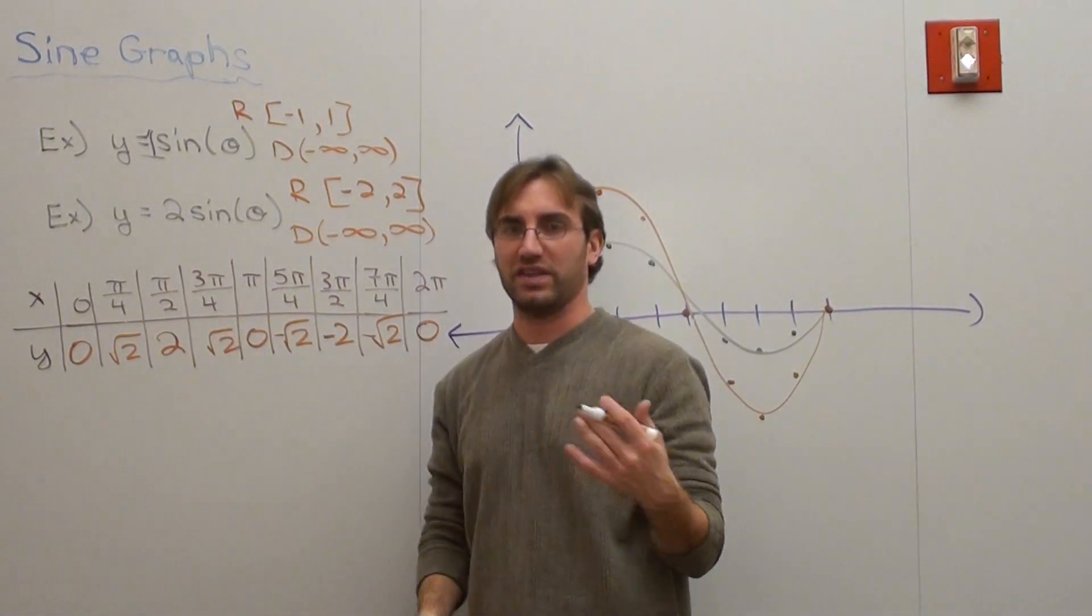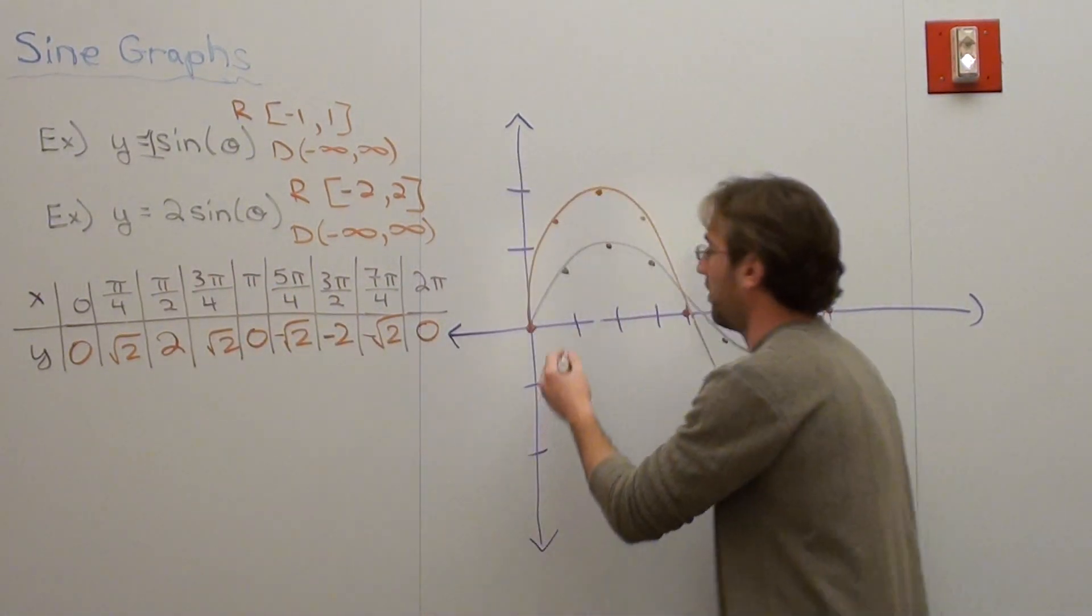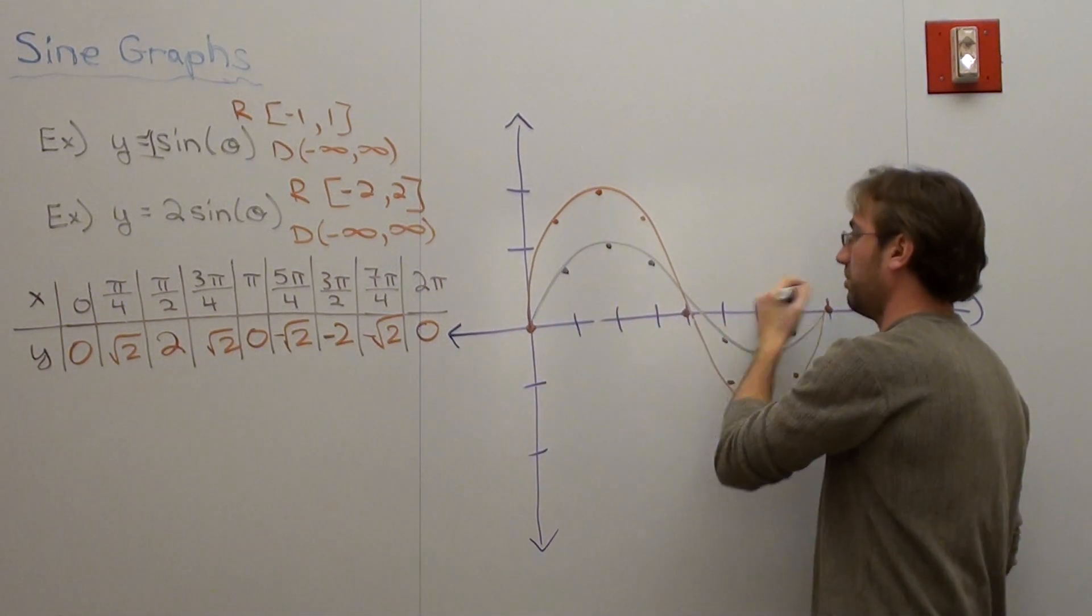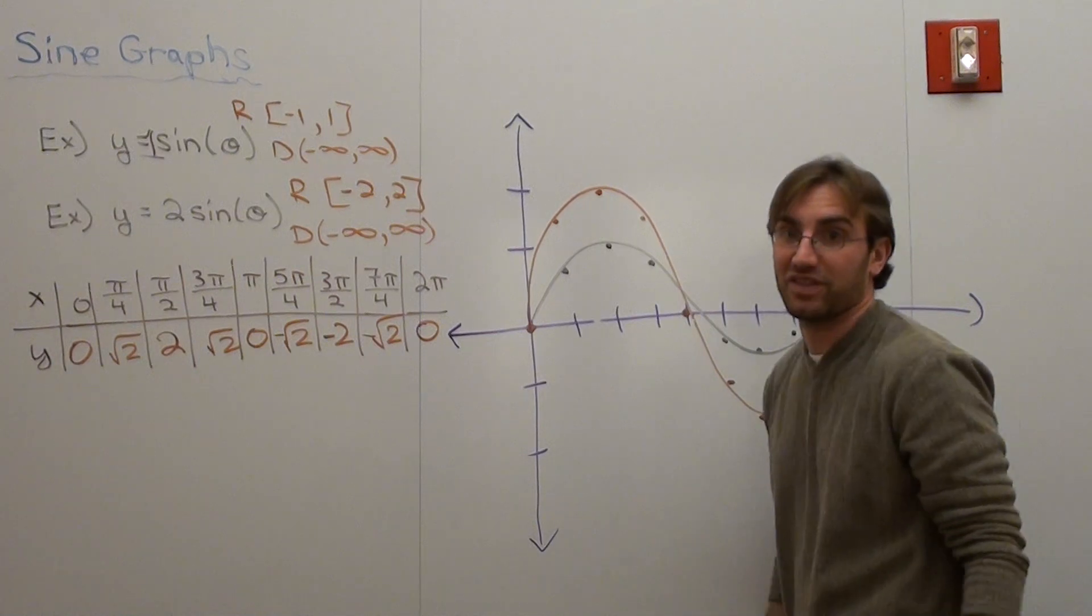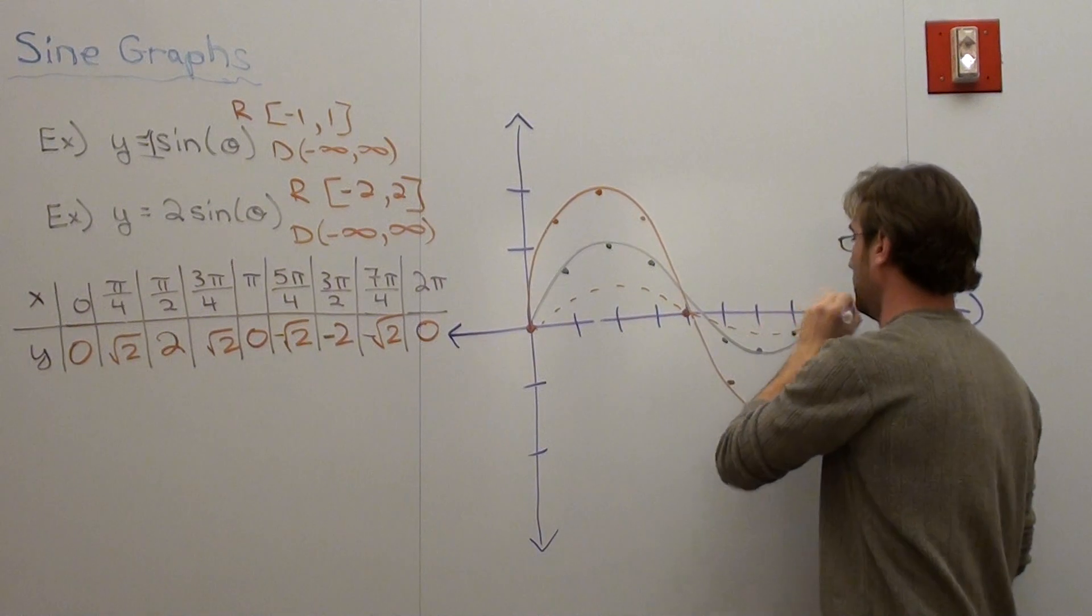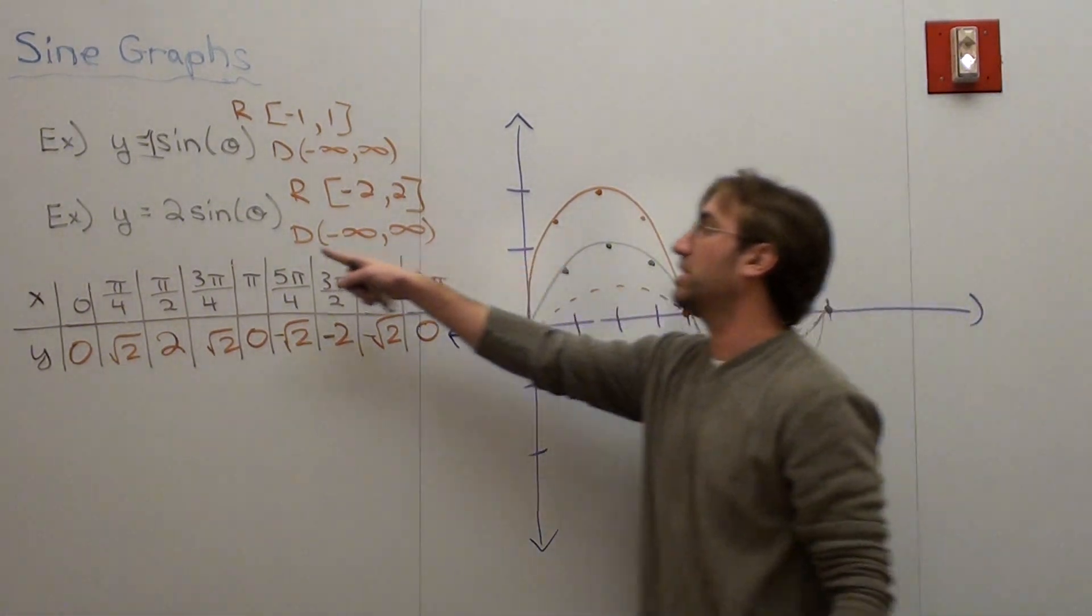If I believe y equals 1 half sine theta, which I'm not going to do, then the graph would look something like this. It'd be half of that one, actually. Something like that.